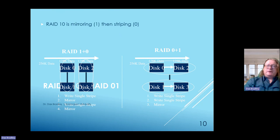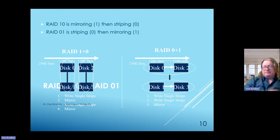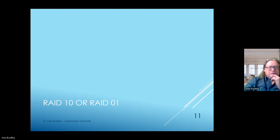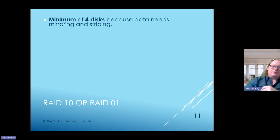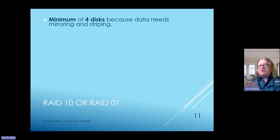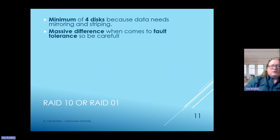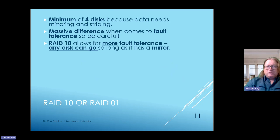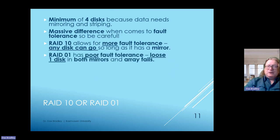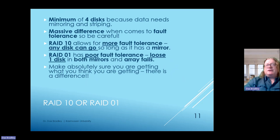RAID 1 plus 0 is mirroring then striping—a best-of-both-worlds marriage of technologies. RAID 01 is striping then mirroring. There's a minimum of four disks because the data needs to be both mirrored and striped. The massive difference comes down to fault tolerance: RAID 1 plus 0 allows for more fault tolerance because any disk can fail and there should be a mirror of it. RAID 01 has poor fault tolerance—you lose one disk and both mirrors fail. Ensure you're getting what you think you're getting; there is a difference.